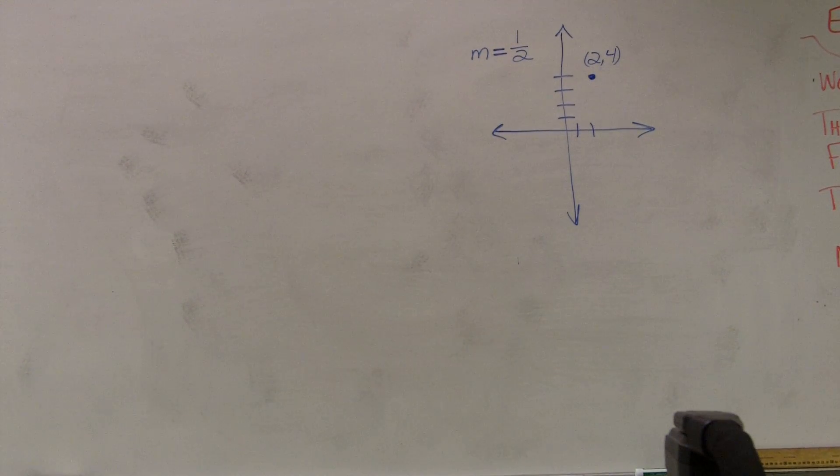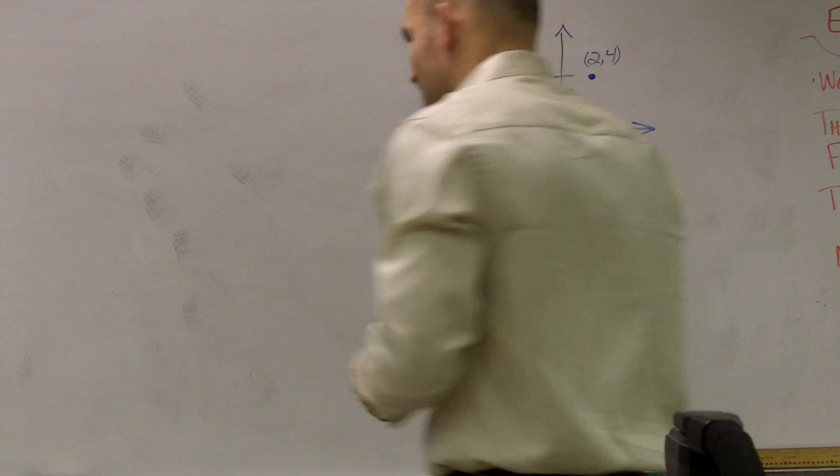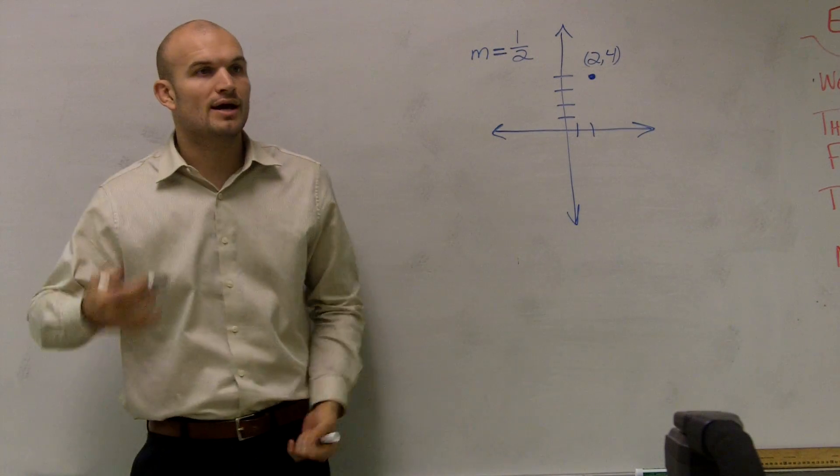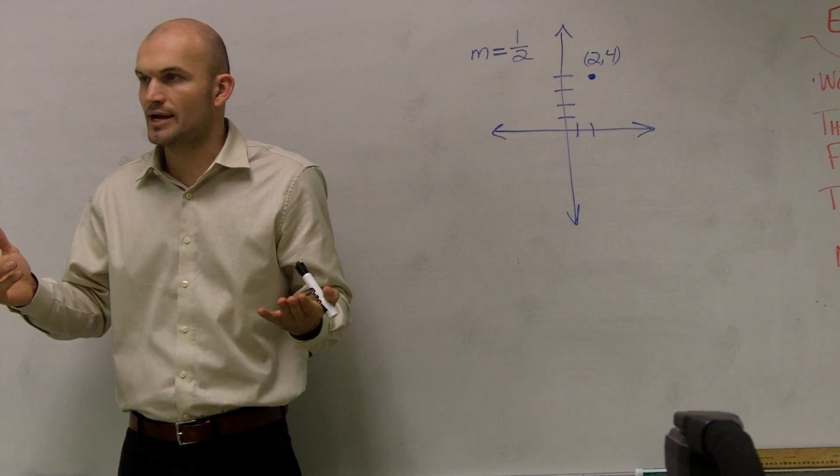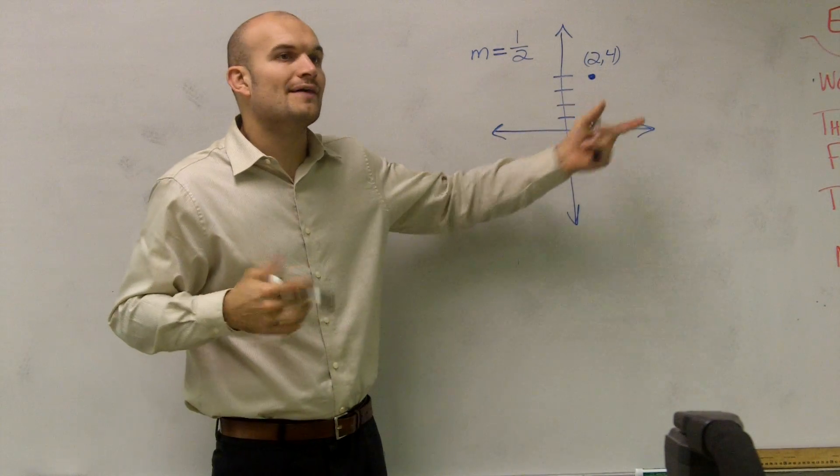So the problem asks us to find the equation of the line if we're given a point and a slope. What I did was I just kind of made up—because guys, whenever you're taking a test, if you're a visual person, flip over your test and write a graph of what it looks like. Make yourself a little graph. If you need to visualize it, make yourself a little graph.